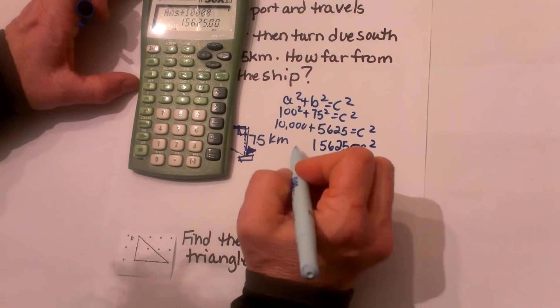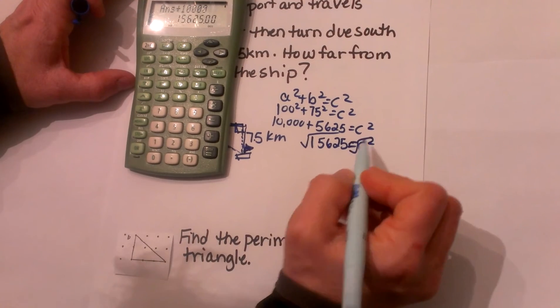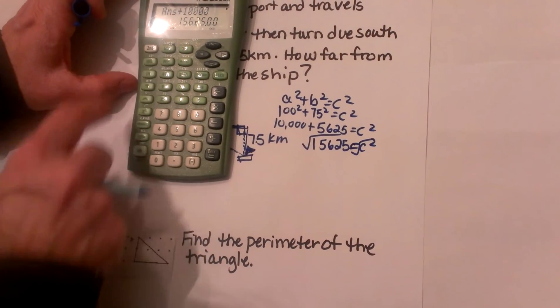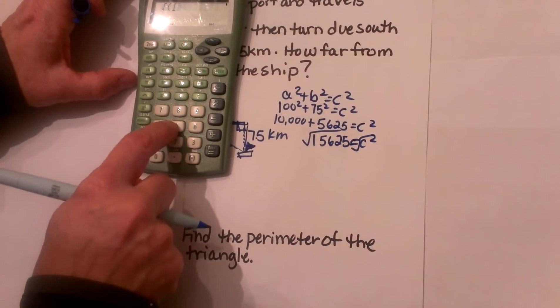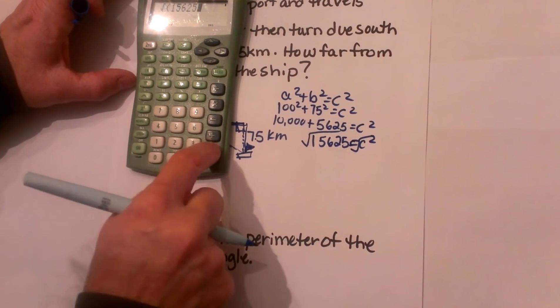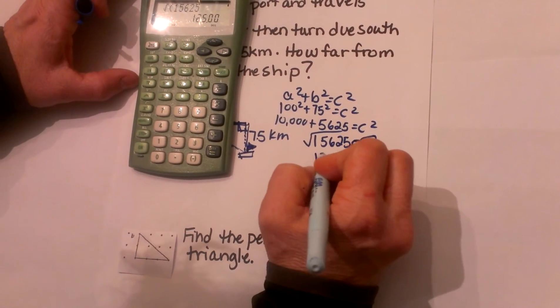To undo a square, I am going to square root both sides. So let's take the square root of 15,625 and I am going to get 125.